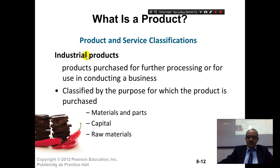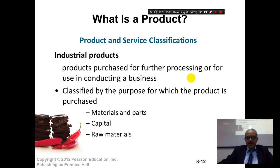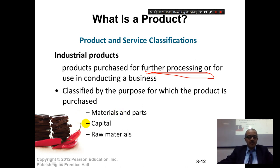On the other hand, industrial products are products purchased for further processing and for use in conducting business. They are classified into materials and parts, capital, and raw materials. Materials and parts include things like spare parts, iron, or cement. Capital includes capital equipment such as a big pickup truck, or financial capital assets. Raw materials are the raw inputs used in production. Any questions on this?